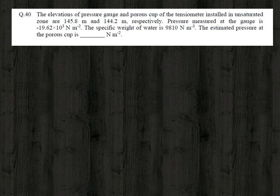The first question is: the elevation of the pressure gauge and porous cup of the tensiometer installed in an unsaturated zone are 145.8 meter and 144.2 meter respectively. The pressure measured at the gauge is minus 19.62 into 10 raised to 3 Newton per meter square. The specific weight of water is 9810 Newton per meter cube.